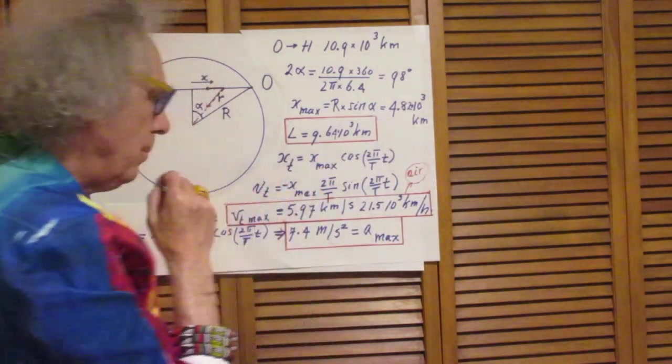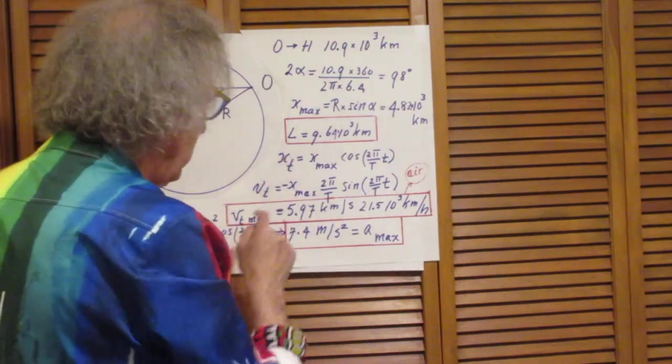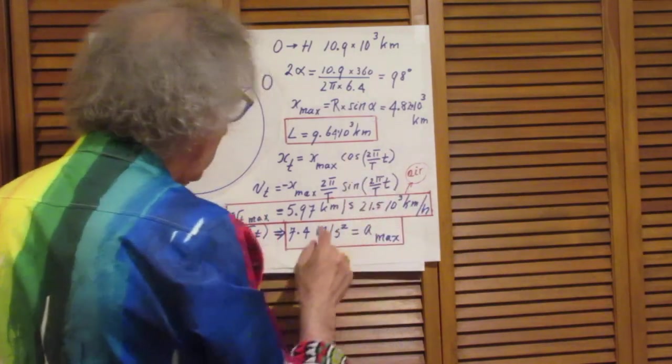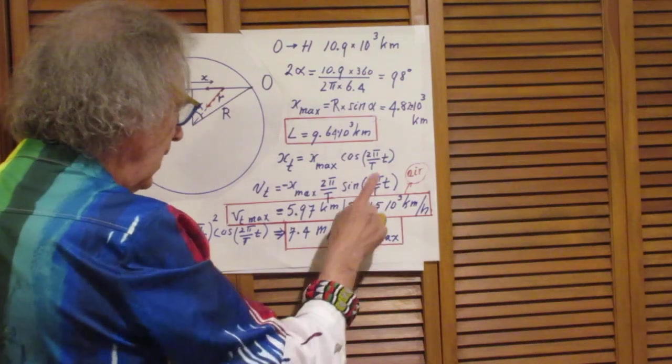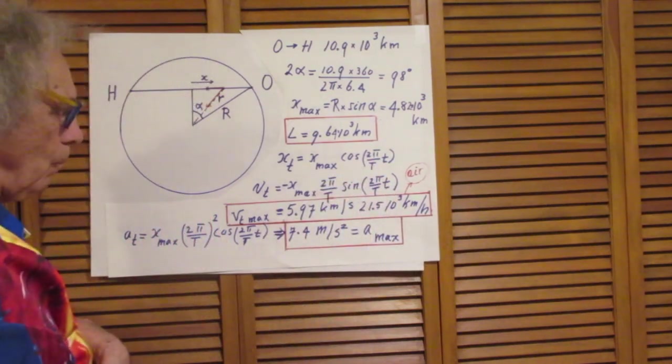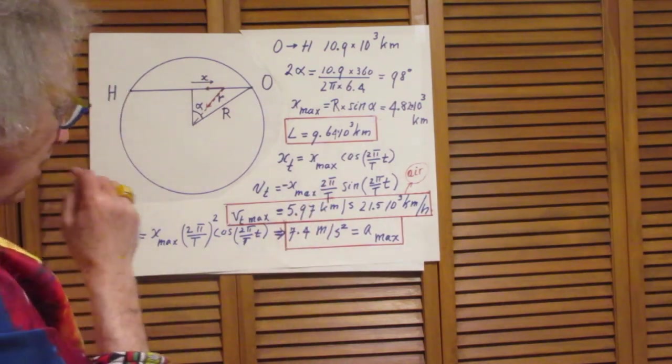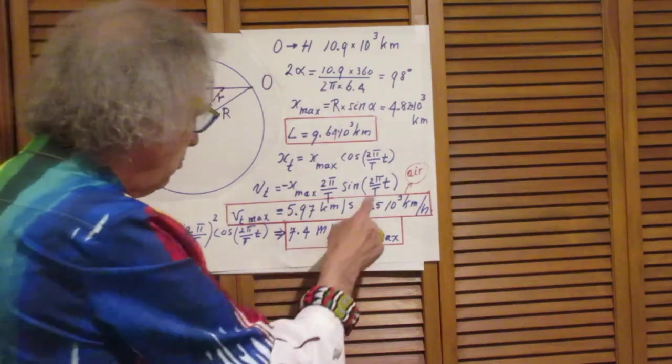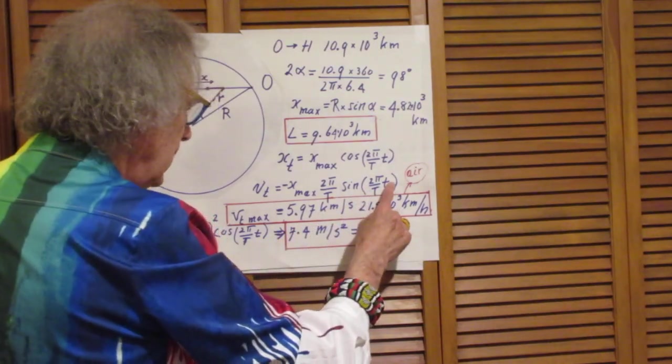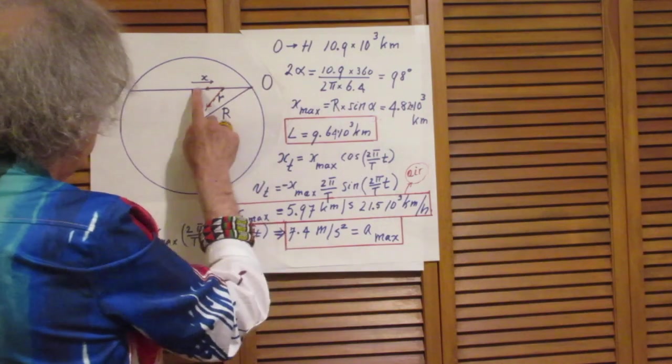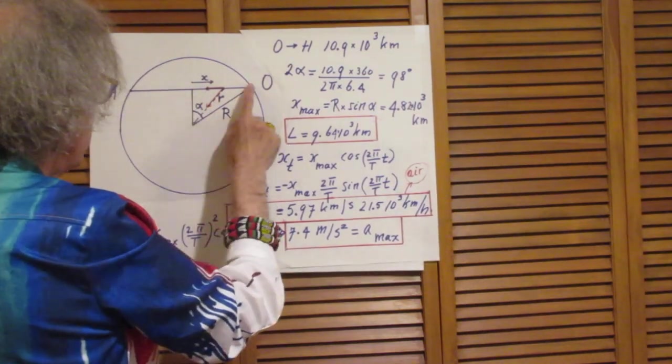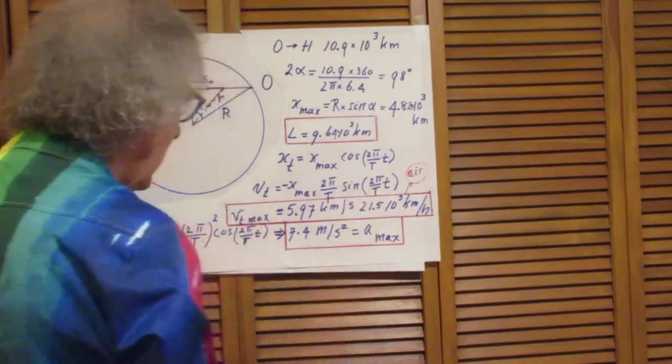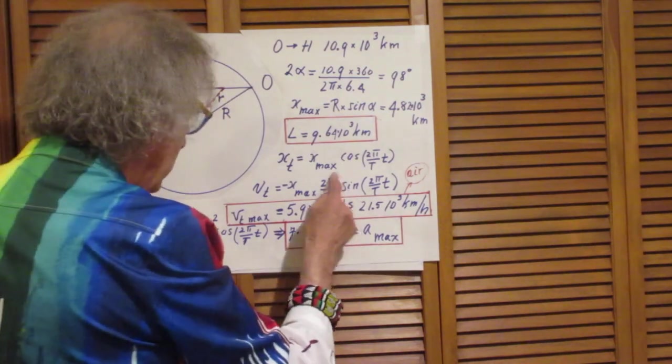We take the first derivative of position versus time, that is the velocity in time. The derivative of the cosine function is minus the sine function, and the 2π over T pops out in front. When is this a maximum? It's a maximum when the sine is plus 1 or minus 1. Suppose little t is one quarter of capital T, so this angle is 90 degrees. Then the sine of 90 degrees is 1, and so this is your maximum speed.